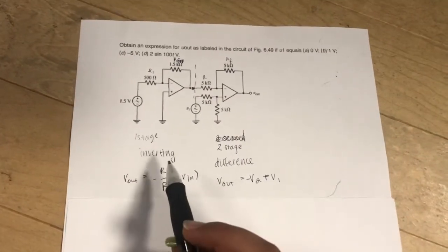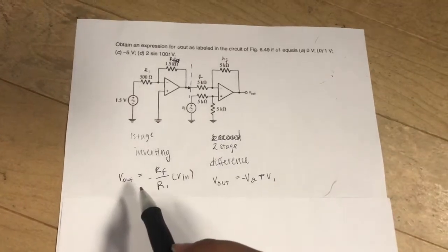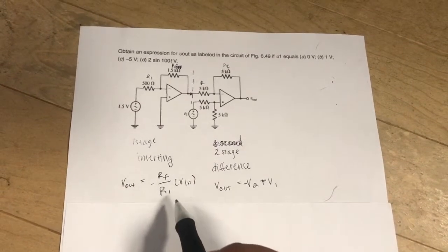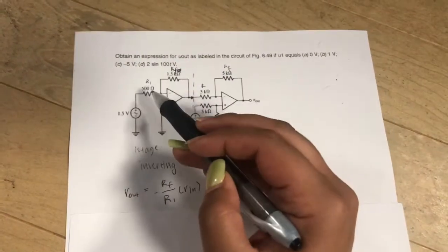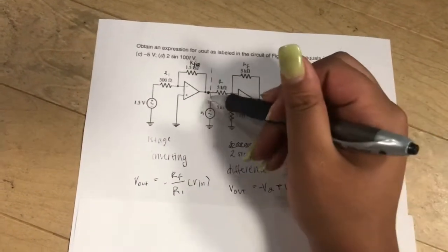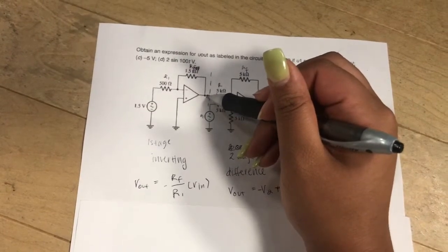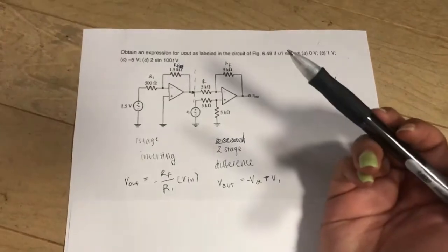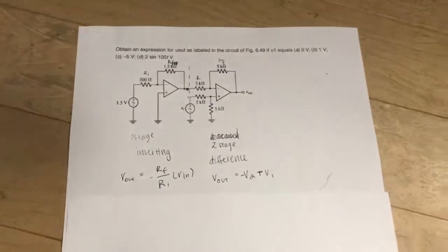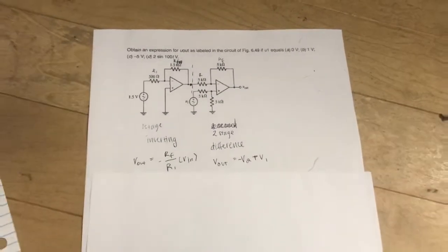For the inverting op amp, the Vout equation is negative Rf over R1 times Vin. Rf can be found here, and R1 can be found here, and then this is Vout. In order to solve for this op amp, we must solve for the first stage first. So here we can start.